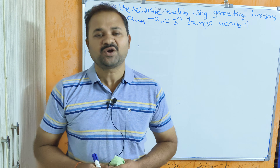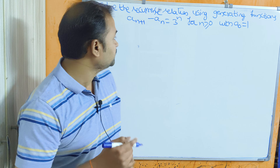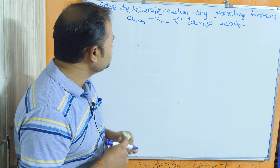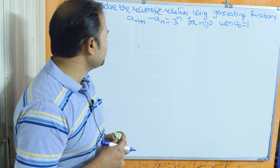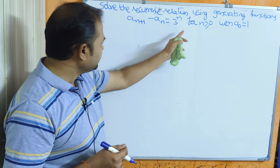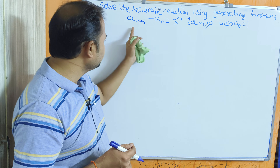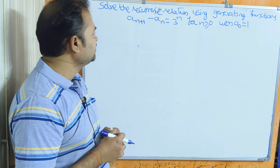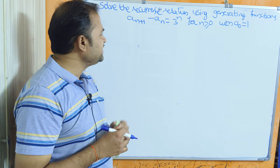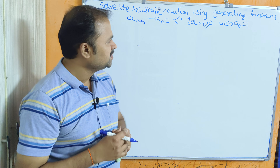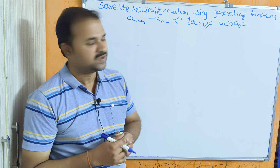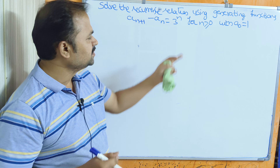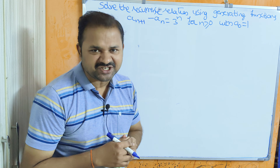Let us solve this problem. Solve the following recurrence relation using generating functions. The recurrence relation is a(n+1) minus a(n) equal to 3^n for n greater than or equal to 0, with a(0) equal to 1. We have to solve this recurrence relation with the help of generating functions.